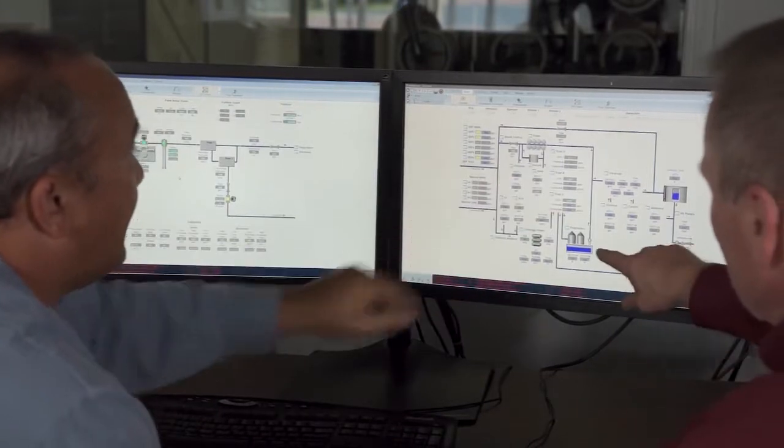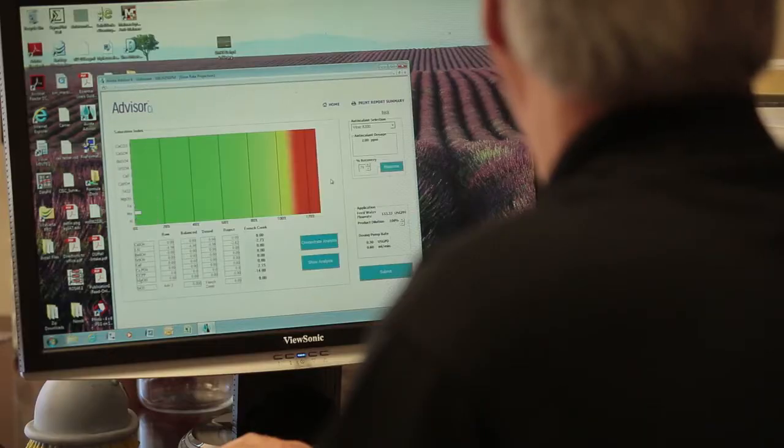Because water is so short in demand, it's very important that when you design an RO system, you design it to recover as much of the feed water as you possibly can. The Advisor CI allows them to design more accurately. In some cases, design for things they didn't think they could do to start with.